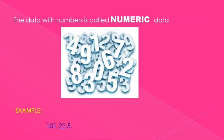Next, the data with numbers is called numeric data. So the data with full of numbers is called numeric data type. Here are some examples for numeric data type: 101, 22 and 5. These are the examples for numeric data type. Give an example for numeric data type. Yes. The phone number is also a numeric data type.